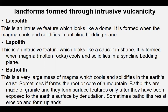The next one is a batholith. This is a very large mass of magma which intrudes and solidifies in the Earth's crust. Sometimes it forms the root and the core of a mountain. These bodies are made up of granite and they form surface features only after they have been exposed at the Earth's surface by erosion.